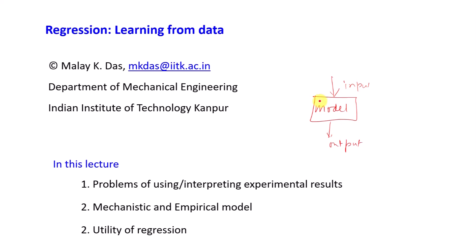For instance, if you want to predict tomorrow's weather, you do not have an equation you can readily solve. If you want to predict the longevity of a living person, you again do not have an equation to solve. So what we do is take data and from those data try to make a prediction — that is the part we are going to learn now. This subject is nowadays called machine learning, and a small part of it we will study in upcoming weeks. Particularly in this lecture we will study the problem of using and interpreting experimental results, two types of models — mechanistic and empirical — and the new topic of regression: what it is and its utility.